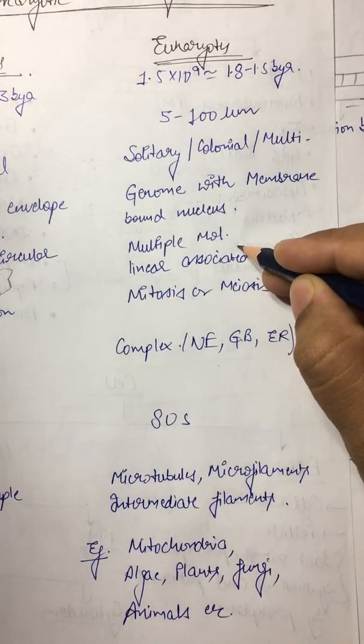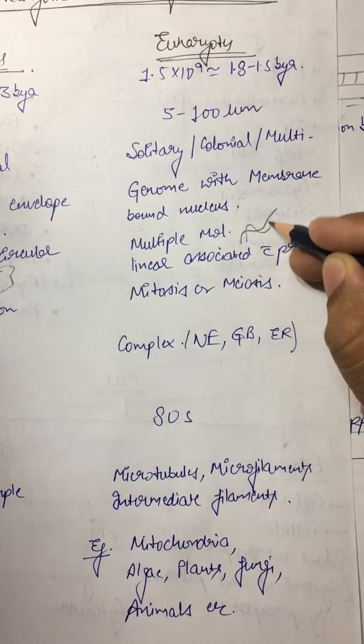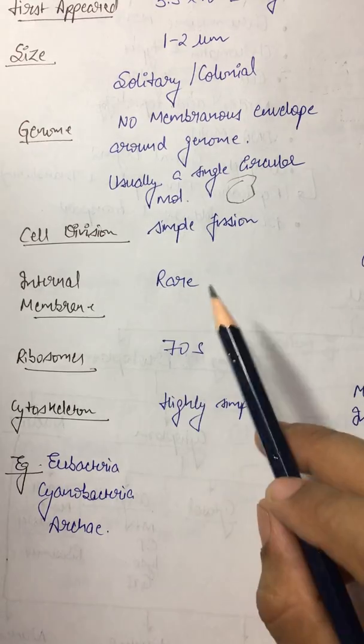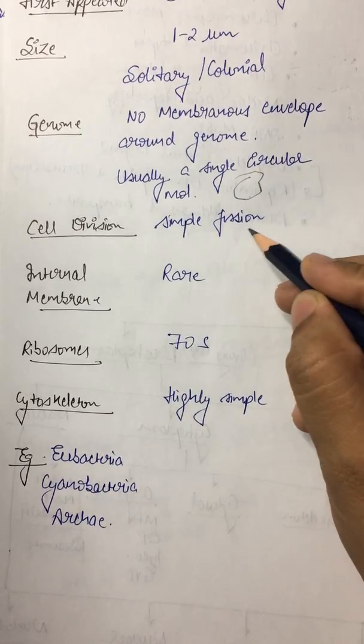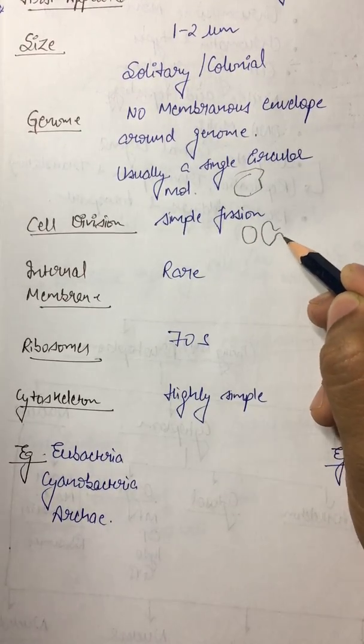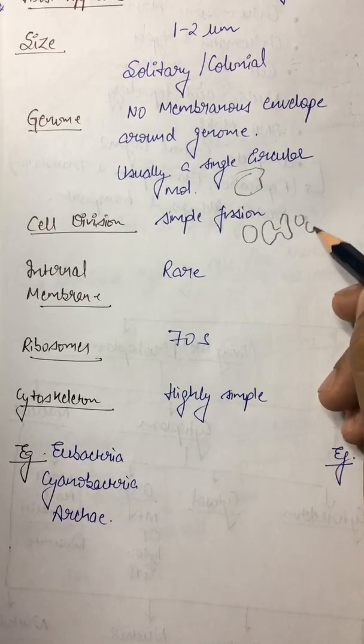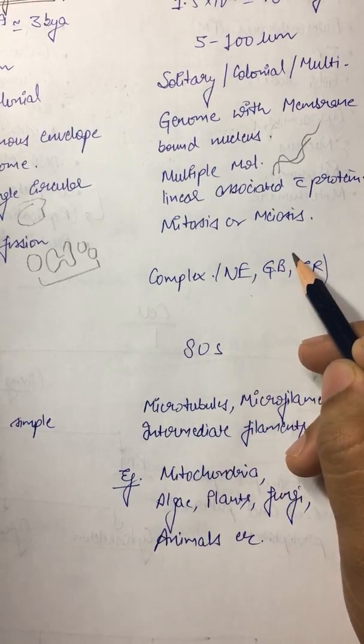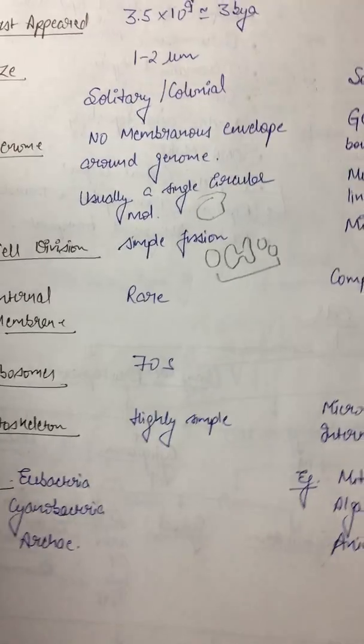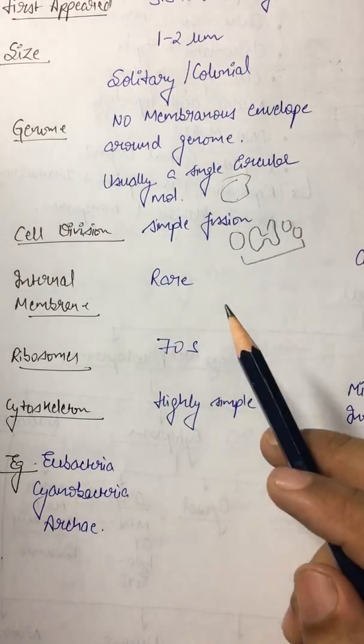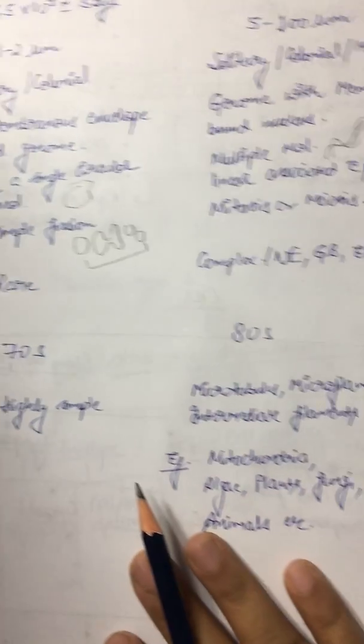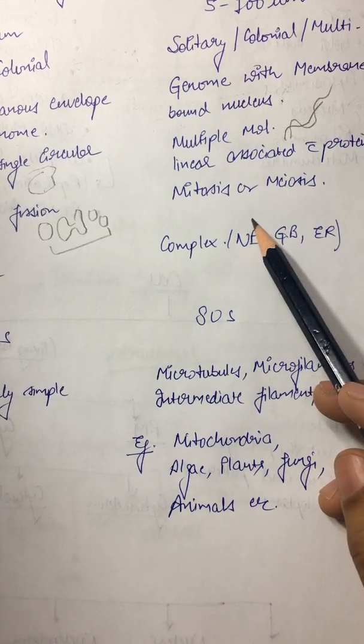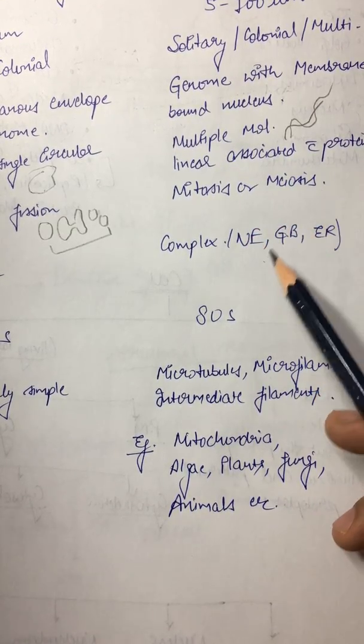You must be knowing the structure of DNA, double-stranded DNA which is present in us. Then cell division: simple fission, one cell will divide into two cells, this is simple fission, then mitosis and meiosis. Internal membrane is very rare in prokaryotes, and in eukaryotes it's complex internal membrane in the form of nuclear envelope, Golgi body, endoplasmic reticulum.